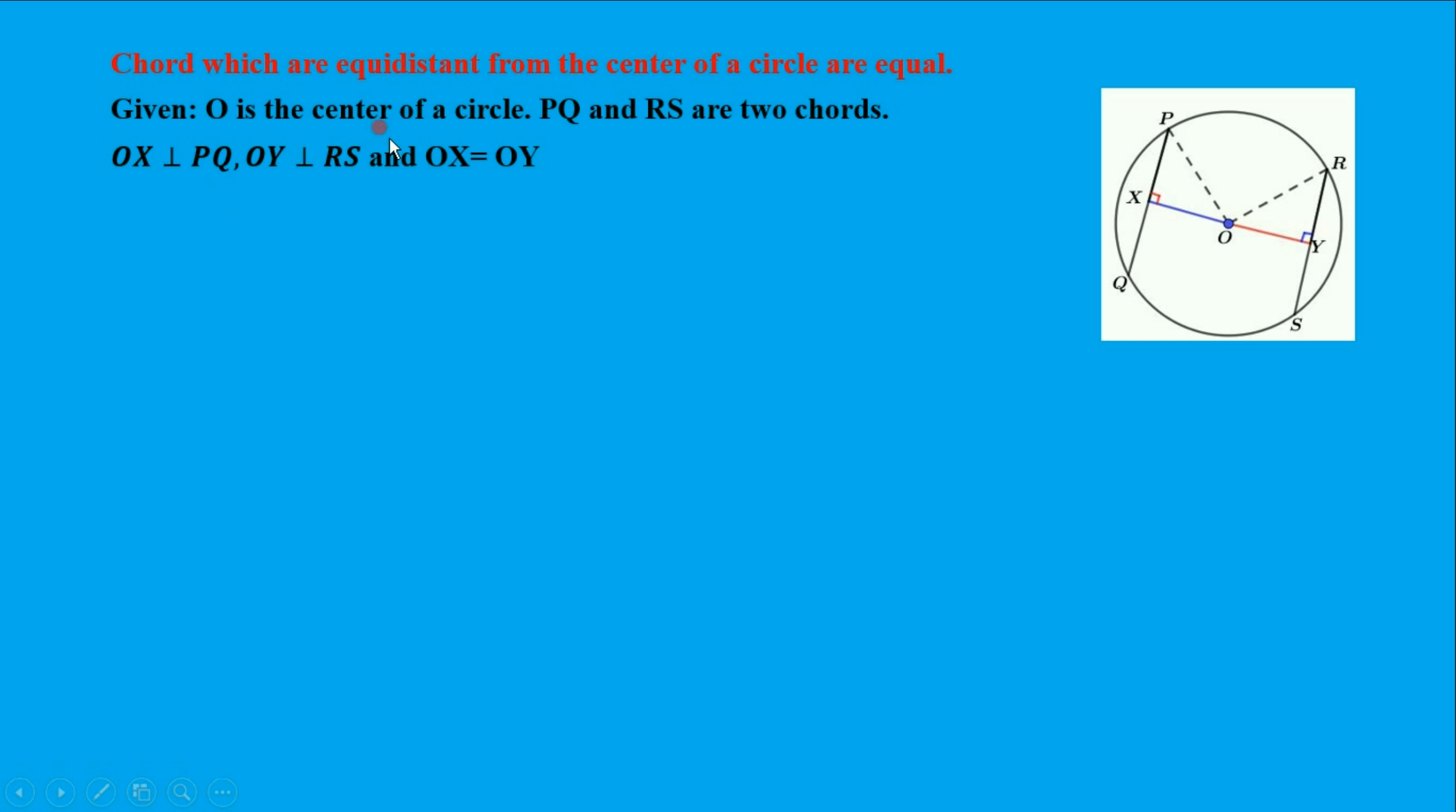Given: O is the center of the circle, PQ and RS are two chords. OX perpendicular to PQ, OY perpendicular to RS, and OX equals OY. This is our given. To prove: PQ equals RS.